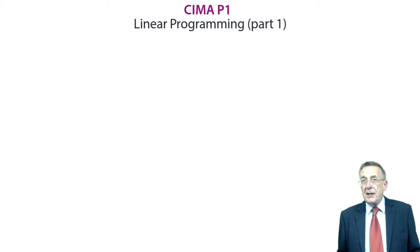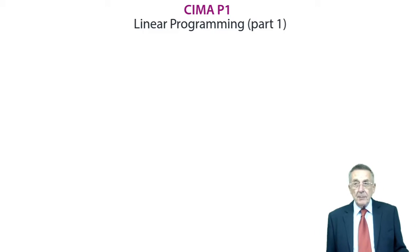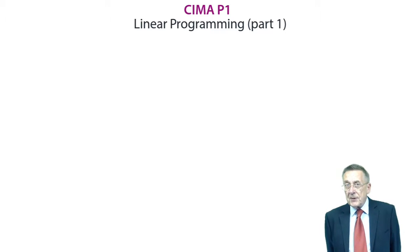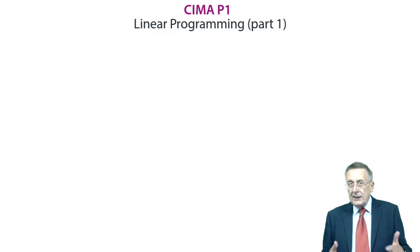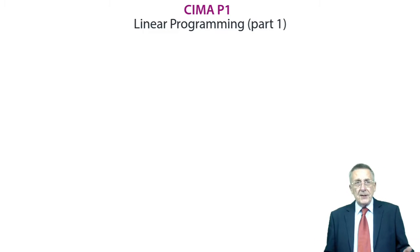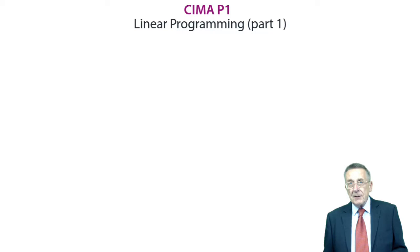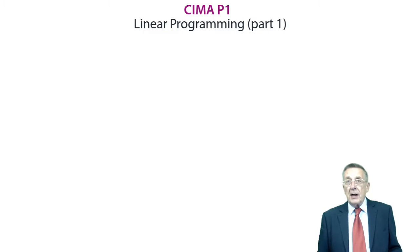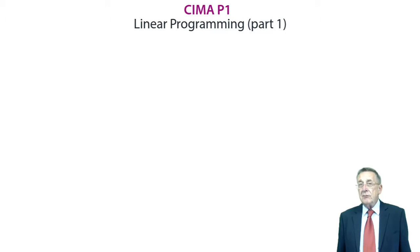To introduce it, just very quickly, you'll remember in an earlier chapter, I think chapter three, we talked about limited resources. And we did conventional limited resource allocation and throughput accounting, but we only had one limited resource. Linear programming is a situation where you have more than one limited resource, which makes it a bit more complicated.